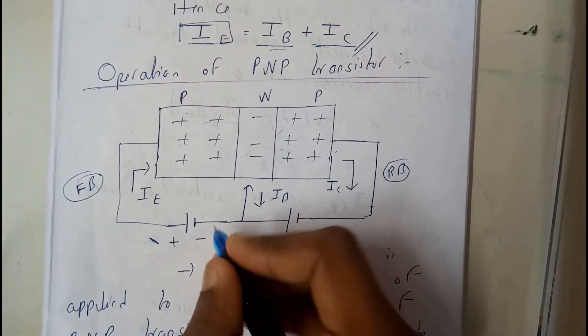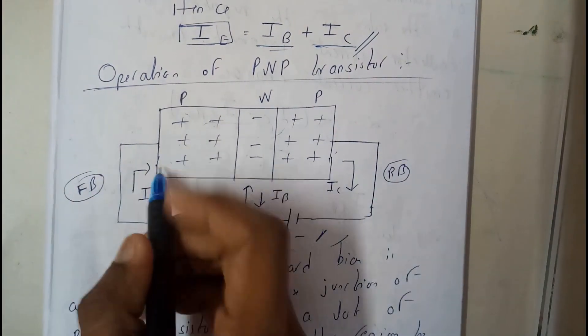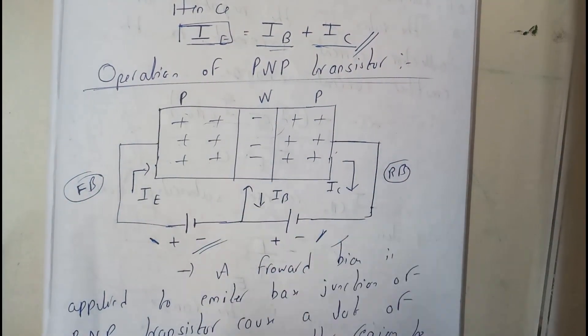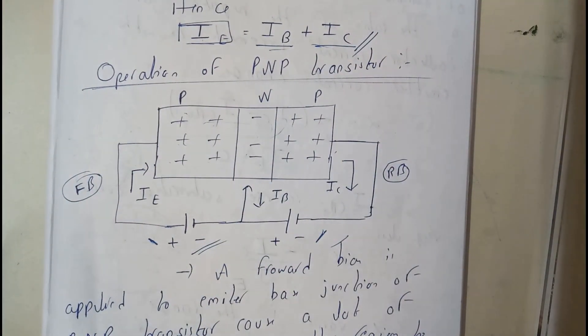The first will be the emitter, second will be the base, third will be the collector. I hope everyone is now hundred percent clear with it.